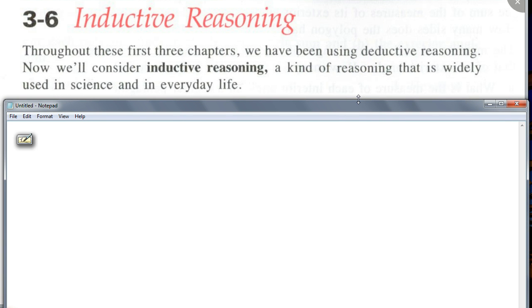Can somebody read this for us? Throughout these first three chapters we have been using deductive reasoning. Now we'll consider inductive reasoning, a kind of reasoning that is widely used in science and in everyday life. Yes, inductive reasoning is used in science and everyday life. So anyone want to guess what this inductive reasoning might be? How do you think it would be different than the deductive reasoning that we've been doing, which is doing things in logical sequence?